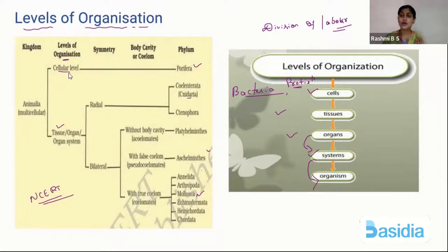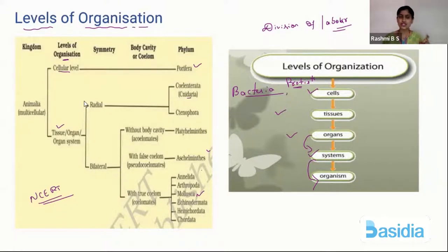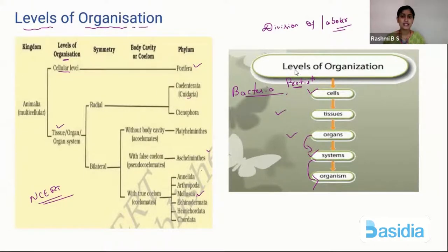Tissue started grouping to make organs, and in higher phylums, organs started grouping to make organ systems — like digestive system, respiratory system, excretory system, circulatory system. Higher animals like Mollusca and Chordates have organ systems. Level of organization is a very important criteria — only Porifera has cellular organization. If you keep comparing what you study with this chart, 50% of animal kingdom will be in your hand. Shall I go to the next criteria? I've done with levels of organization — the first criteria for classification.